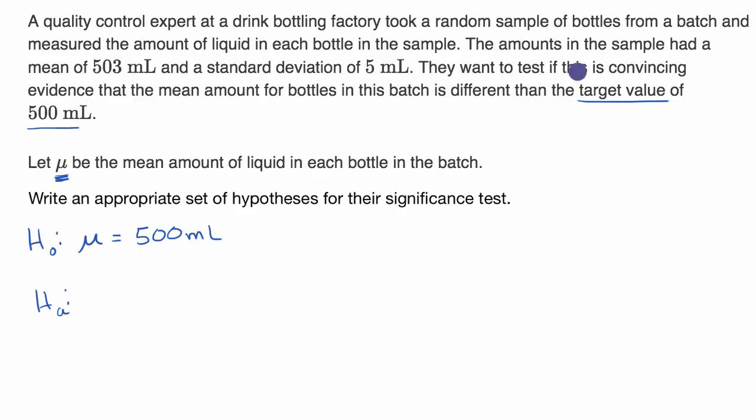Some of you might have said, hey wait, didn't they say the amounts in the sample had a mean of 503 milliliters? Why isn't this 503? Remember, your hypothesis is going to be about the population parameter, your assumption about the population parameter. This 503 milliliters right over here, this is a sample statistic. This is a sample mean that's trying to estimate this thing right over here.